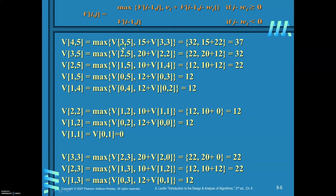V(4, 5) equals the maximum of V(3, 5) and [value of item 4, which is 15] plus V(3, J - W_i). The weight of the 4th item is 2, so J minus W_i is 5 minus 2, which is 3. To find V(4, 5), we need to calculate V(3, 5) and V(3, 3). V(3, 5) equals the maximum of V(2, 5) and 20 plus V(2, 2). V(2, 5) is calculated as maximum of V(1, 5) and 10 plus V(1, 4). Then V(1, 5) is the maximum of V(0, 5) and 12 plus V(0, 3), and V(1, 4) equals the maximum of V(0, 4) and 12 plus V(0, 2).